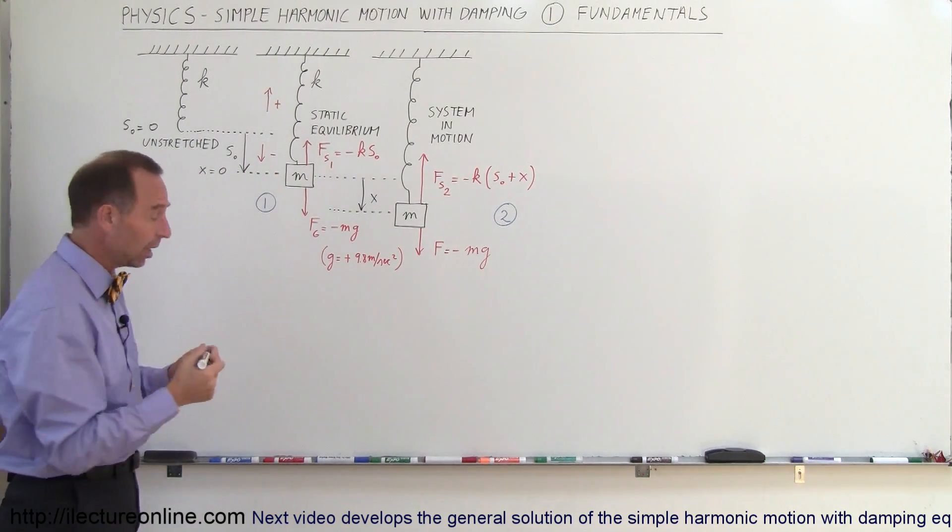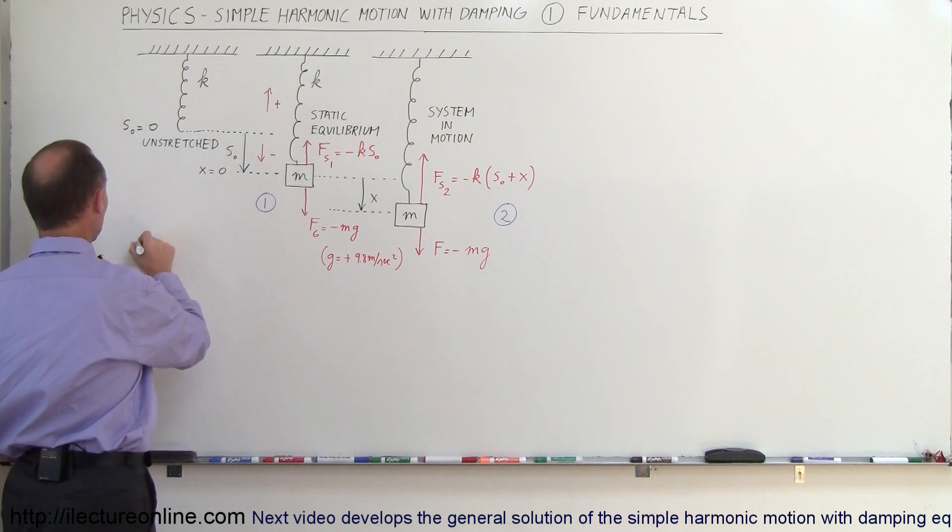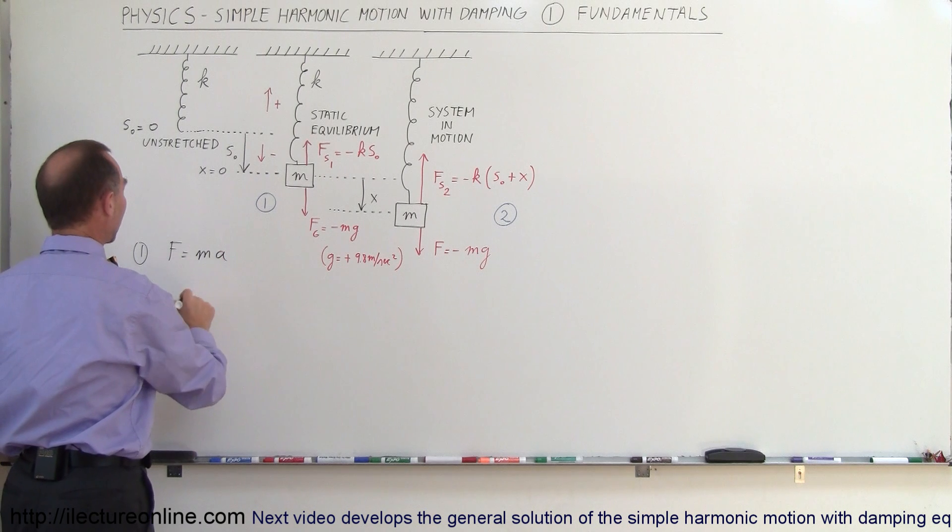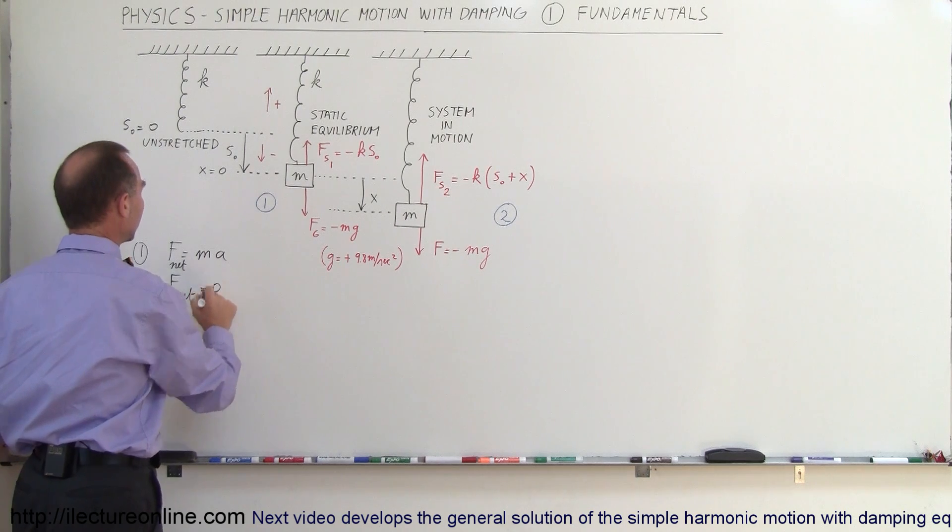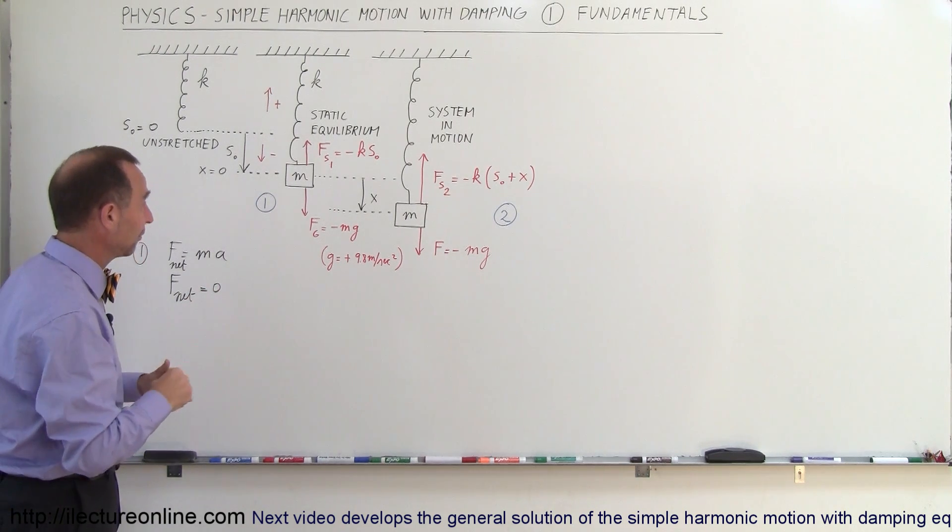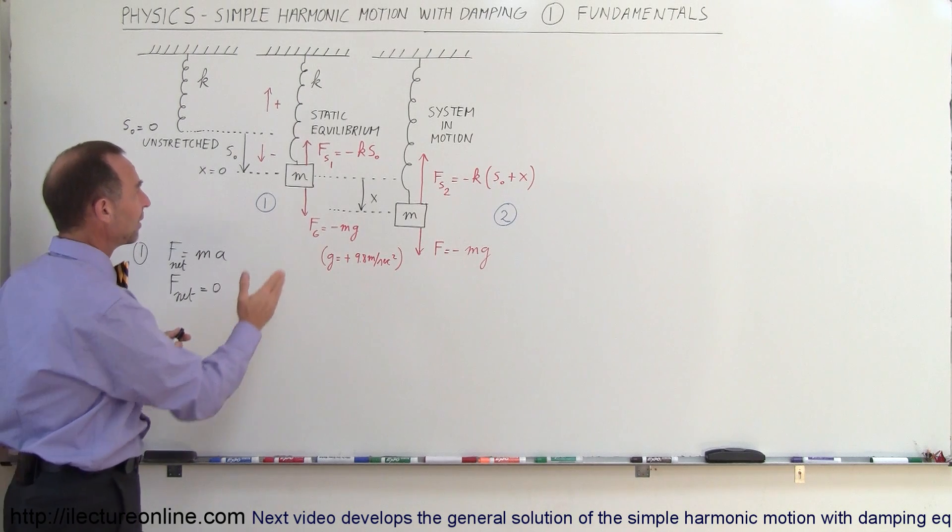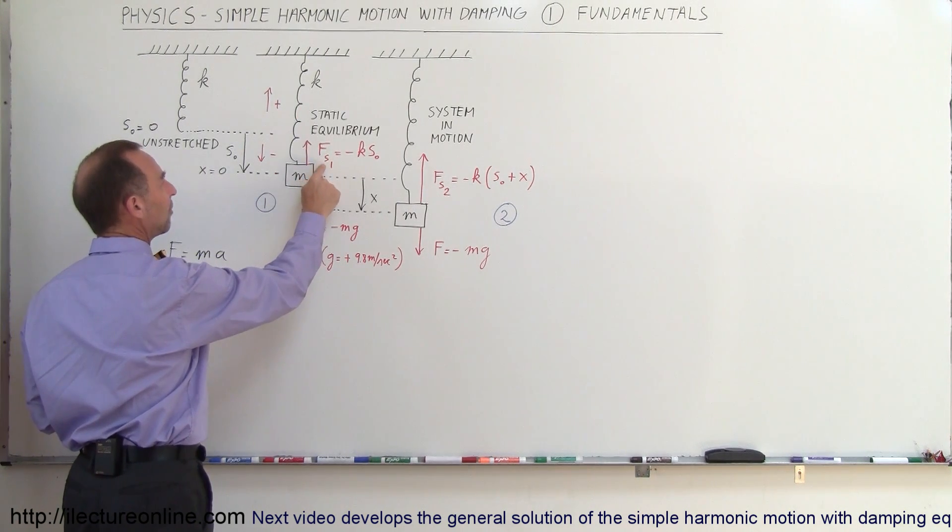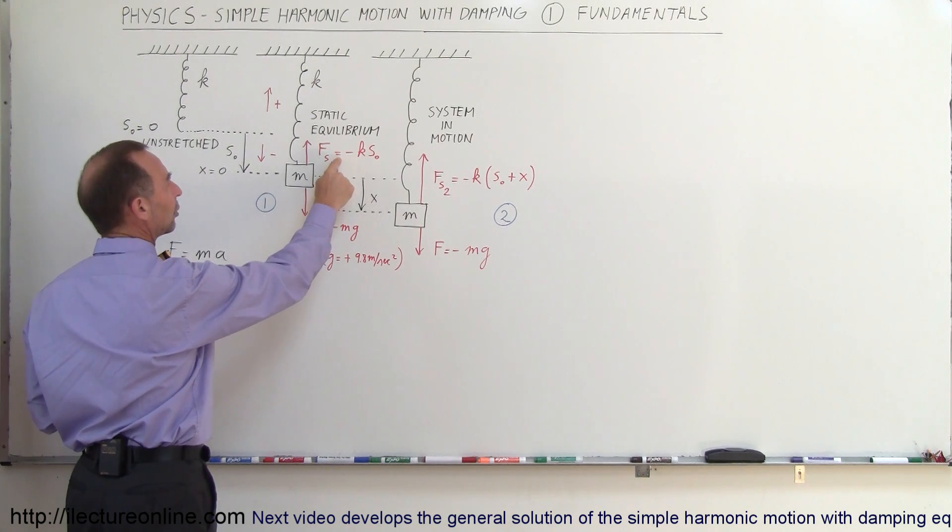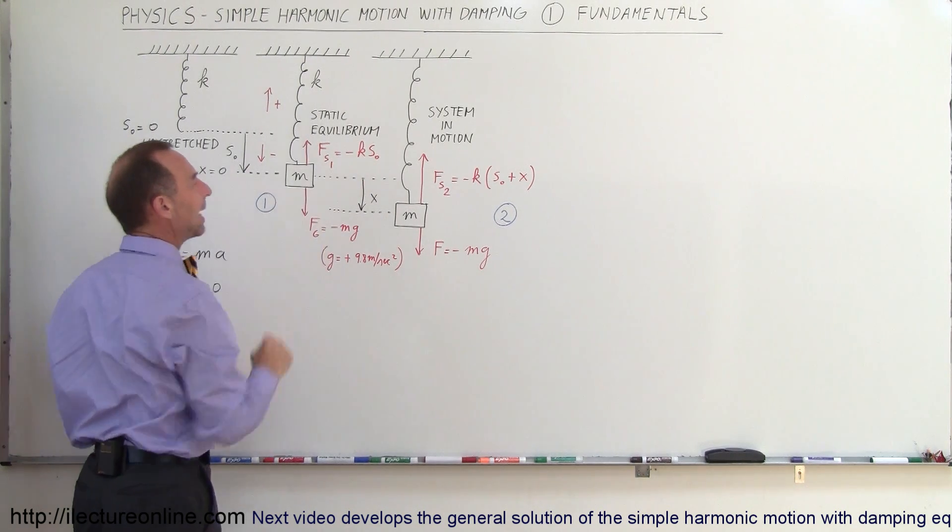In the case of static equilibrium, we can use Newton's second law to say that in case number one, f equals ma, or f net equals ma. In this case, f net is going to be equal to zero because there's no acceleration, there's no motion whatsoever. What are the two forces? We have the force of the spring pulling back upward.